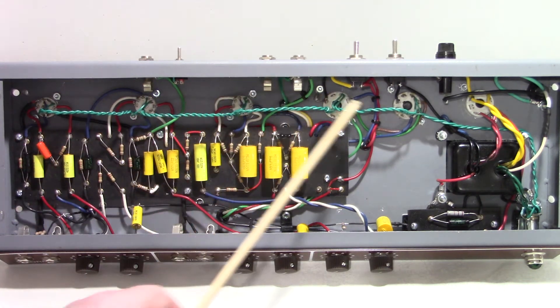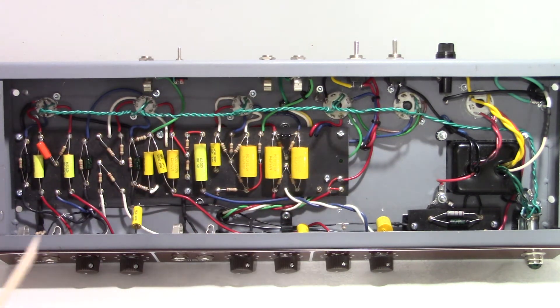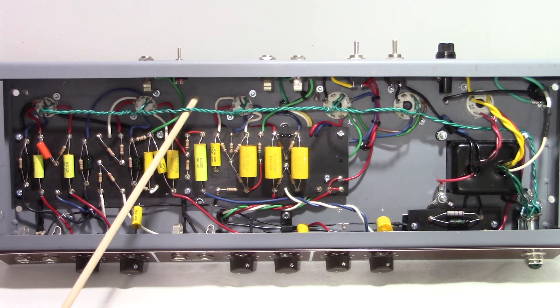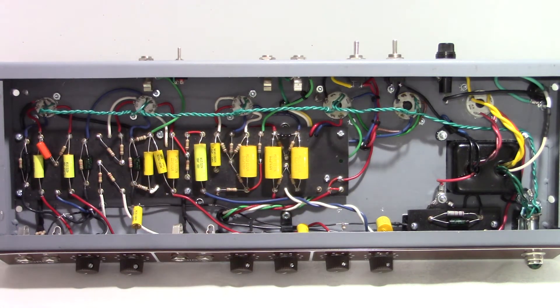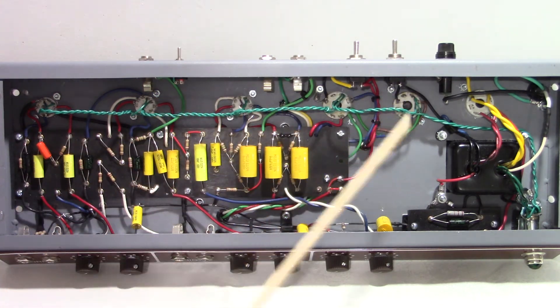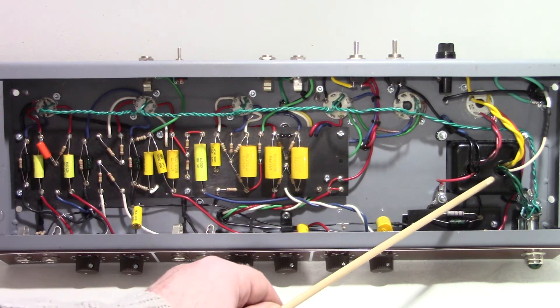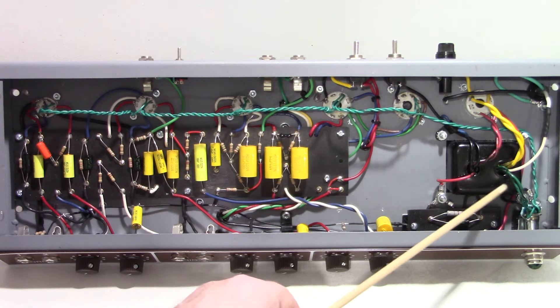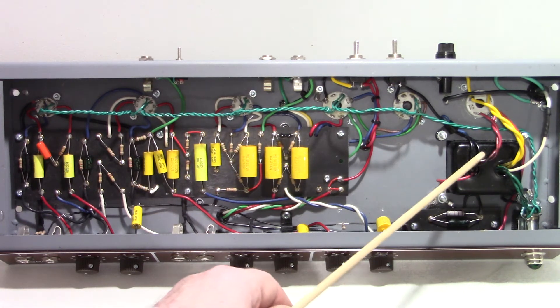The filament supply for the power tubes is here, run above the rest of the circuitry in the traditional way. These are 6.3 volt filaments. Now the Hammond power transformer for this amplifier does not come with a center tap.